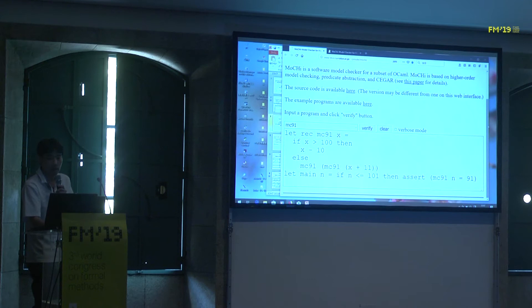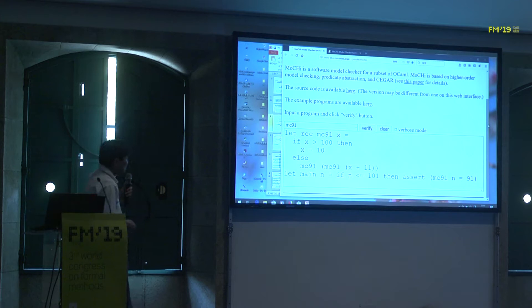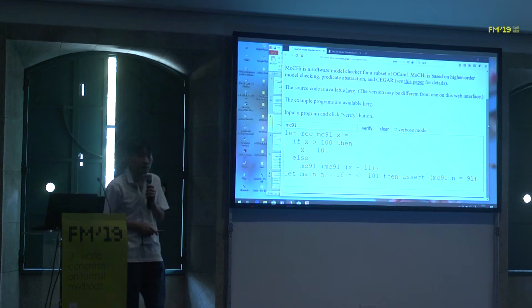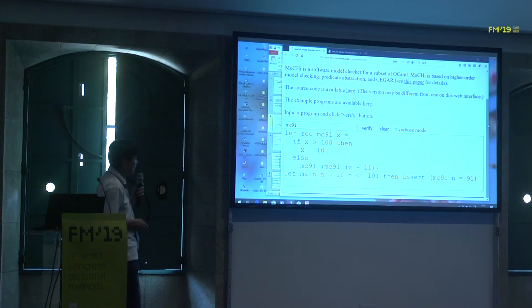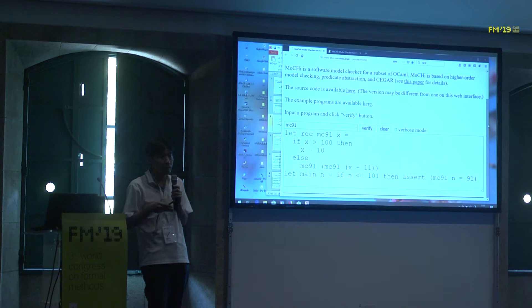This is a sample input, which is just an OCaml program. This part defines a recursive function named MC91 — it implements the MC91 function. The main function asserts the property that if the input N is no greater than 101, then the result should always be 91. The goal of verification is to check that this assertion never fails for any integer input N, including negative integers. We consider unbounded integers instead of 32 or 64-bit integers, so there are infinitely many possible inputs, and we still want to prove that this assertion never fails.